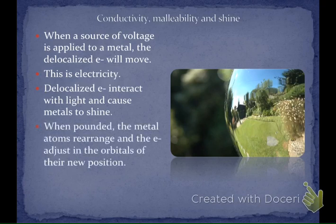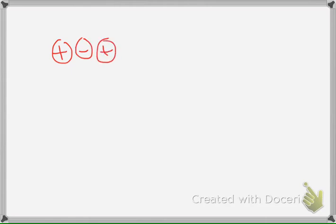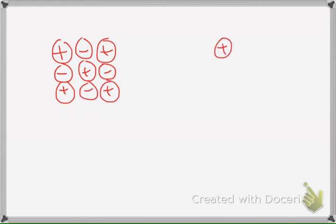When pounded, metal atoms can rearrange themselves and the electrons will adjust into the orbitals of their new positions. Ionic solids can't do that. In an ionic solid, all charges are separated by opposite charges: positive, negative, positive, negative all the way through. In a metallic substance, positive charges are surrounded by and separated from each other by those negative delocalized electrons.